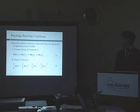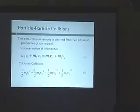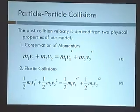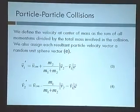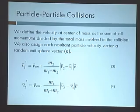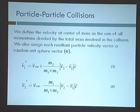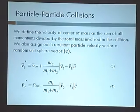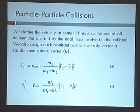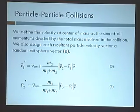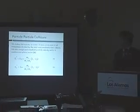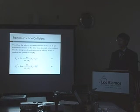For two particles that do collide, we derive their post-collision velocities based on two physical properties: conservation of momentum and kinetic energy. These two equations give the post-collision velocities for two particles that came in with velocities V1 and V2. We have the velocity at the center of mass, which is the sum of all total momentum divided by the total mass involved in the collision. We also have a random unit sphere vector E, which gives two random directions for the particles after the collision.